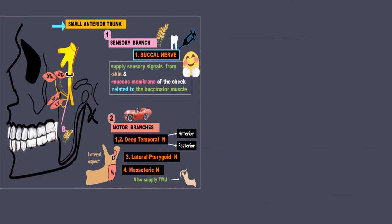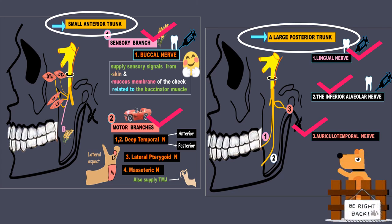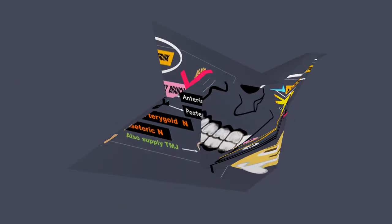A quick recap of the mandibular nerve: the small anterior trunk gives rise to sensory and motor branches. The large posterior trunk gives rise to the lingual nerve, the inferior alveolar nerve, and the auriculotemporal nerve. That's all for now — do let me know in the comments how well you were able to understand and recollect the branches after watching this video. Thank you for watching.